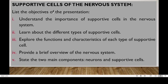The nervous system. The objectives for this section, which are your learning outcomes, include understanding the importance of support cells in the nervous system, learning about the different types of supportive cells, exploring the function and characteristics of each type, providing a brief overview of the nervous system, and stating the two components: the neurons and the nervous support cells.